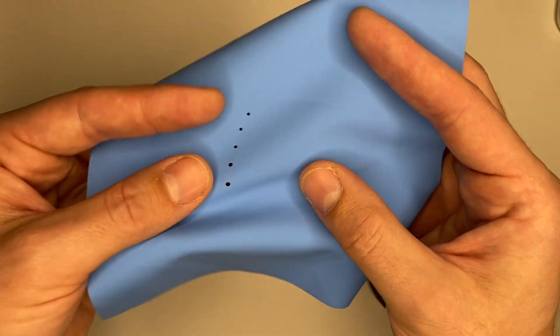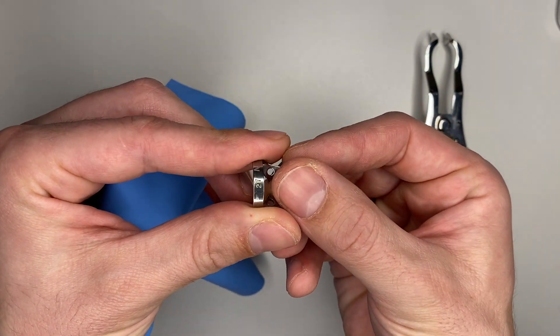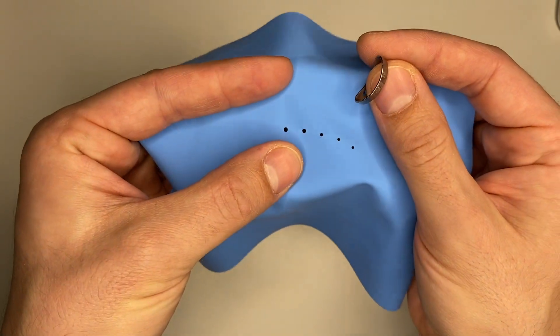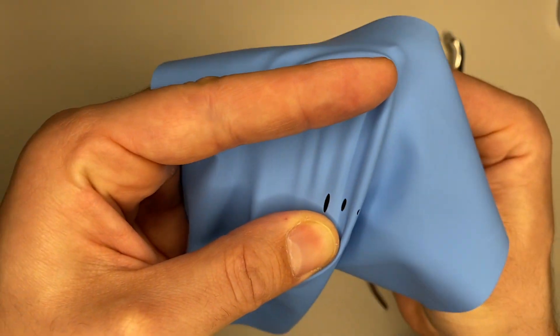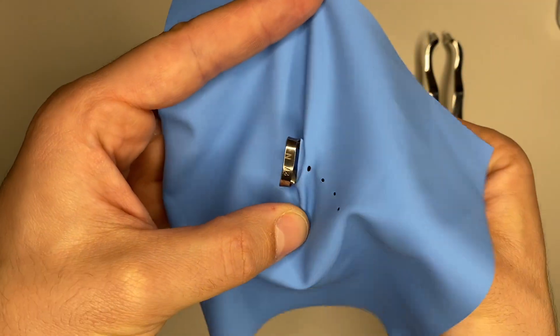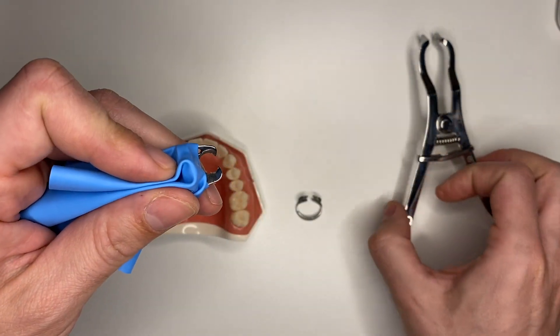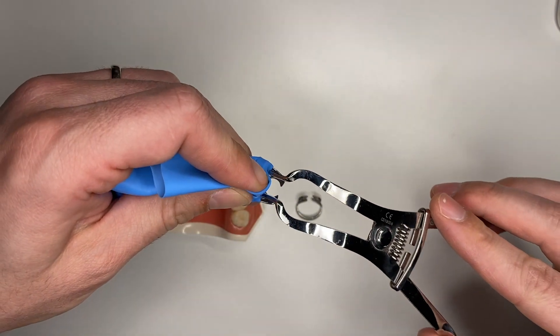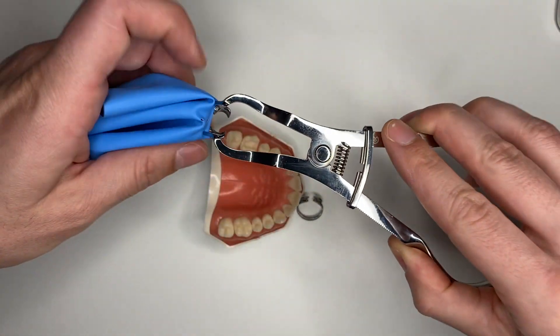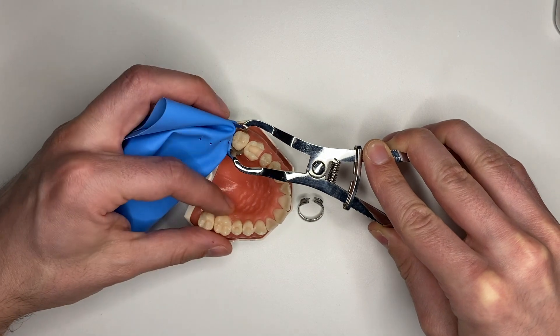First of all, we are going to use the 27 clamp and we are going to use a parachute technique, meaning that we are going to take the connector of the clamp and put it through the last hole like this. Then we are going to take the rubber dam over, and we're going to take our pliers and gently extend the jaws.